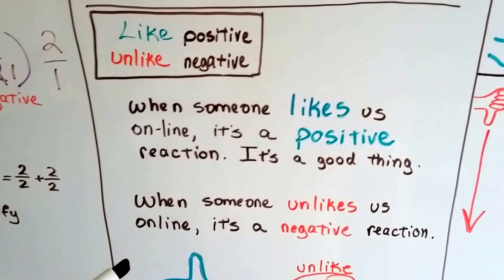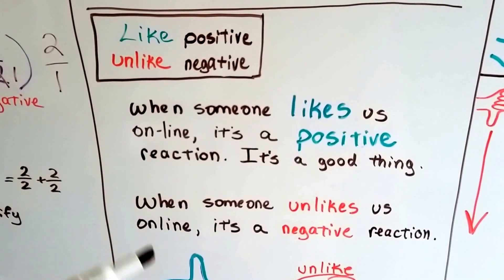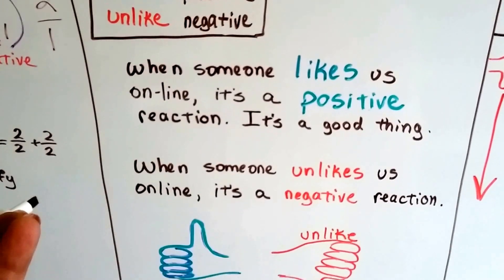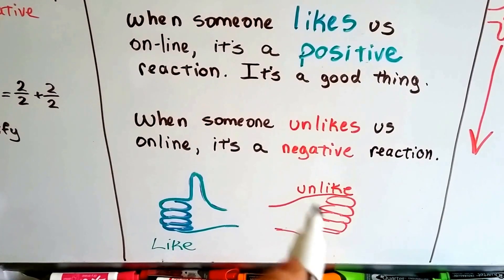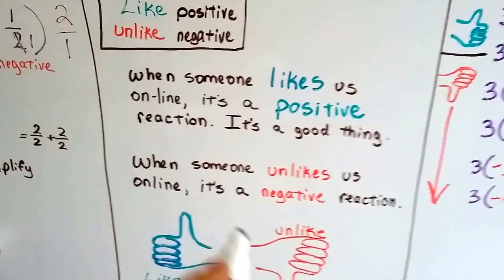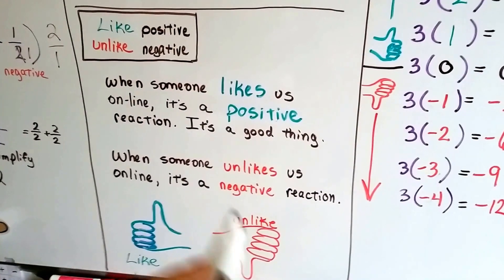When someone unlikes us online, it's a negative reaction. If you're on Facebook or something and someone unlikes you, that means they don't want to be your friend anymore. That's negative, right? So like is positive and unlike is negative. Maybe that will help you remember it, especially if you're on Facebook and Twitter and stuff a lot.